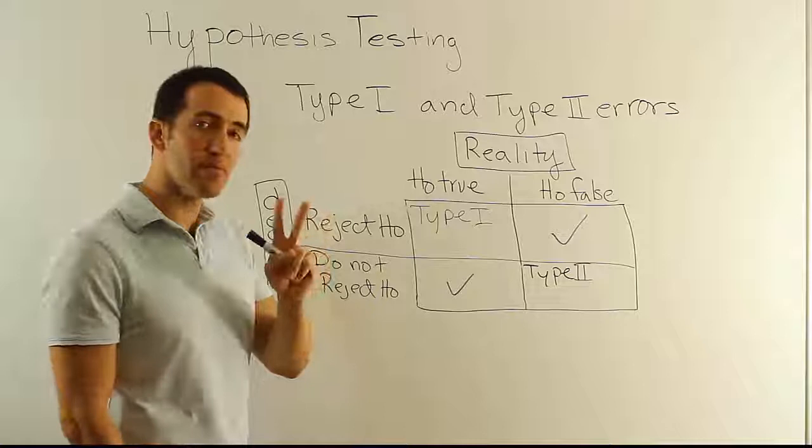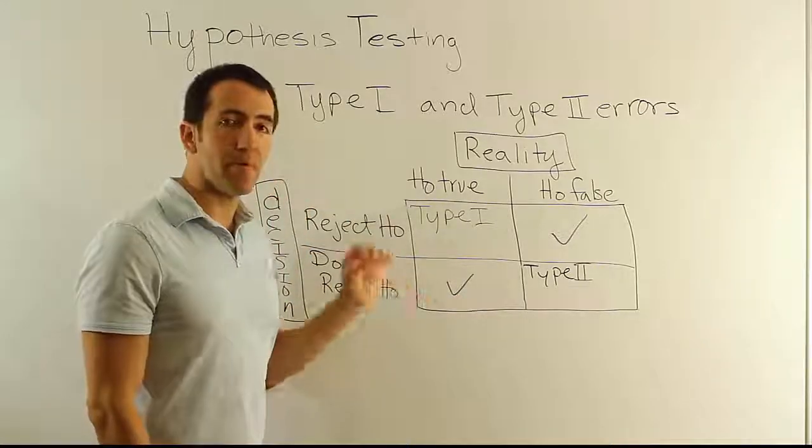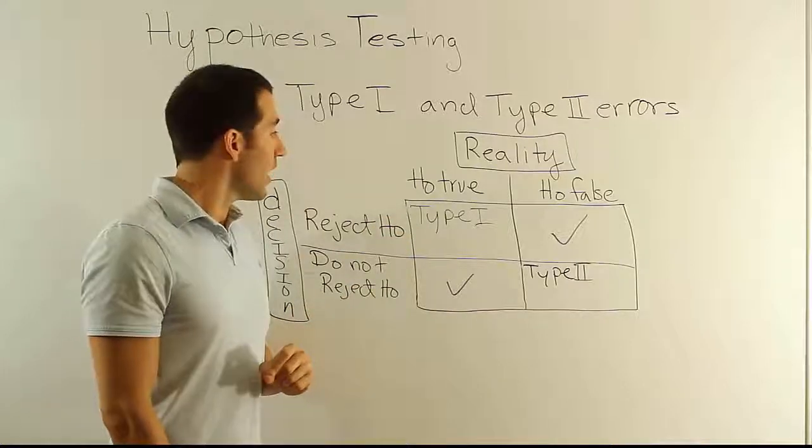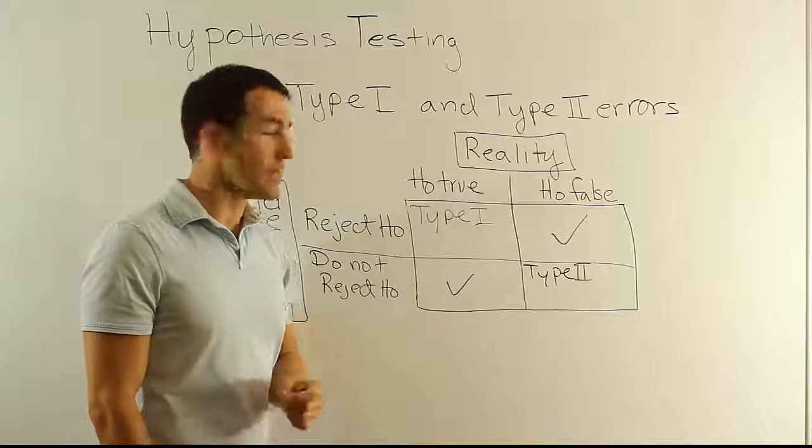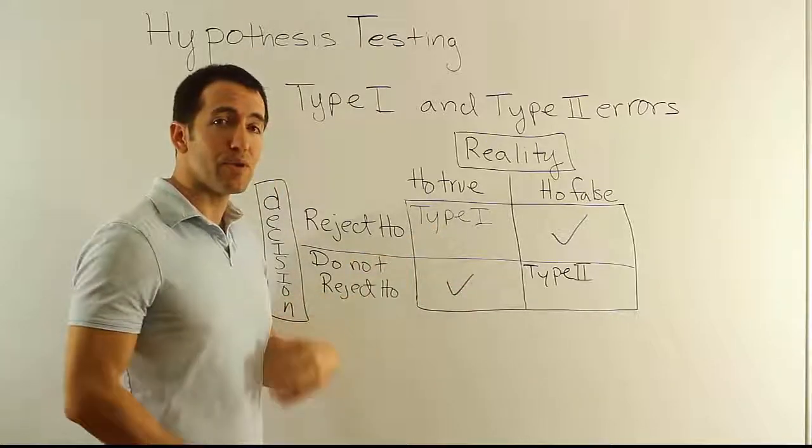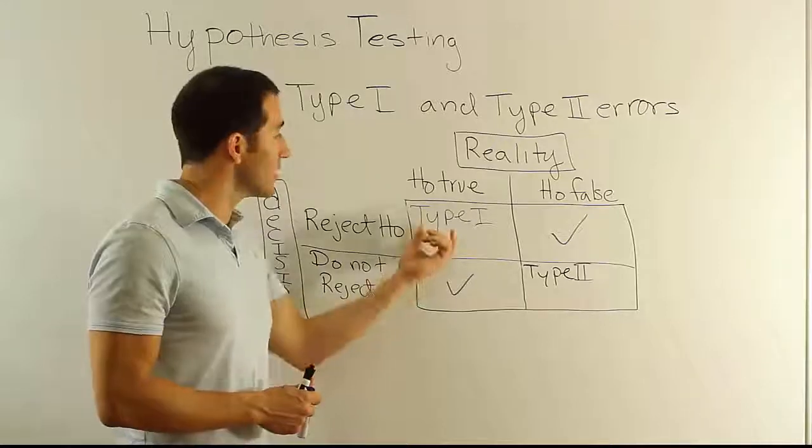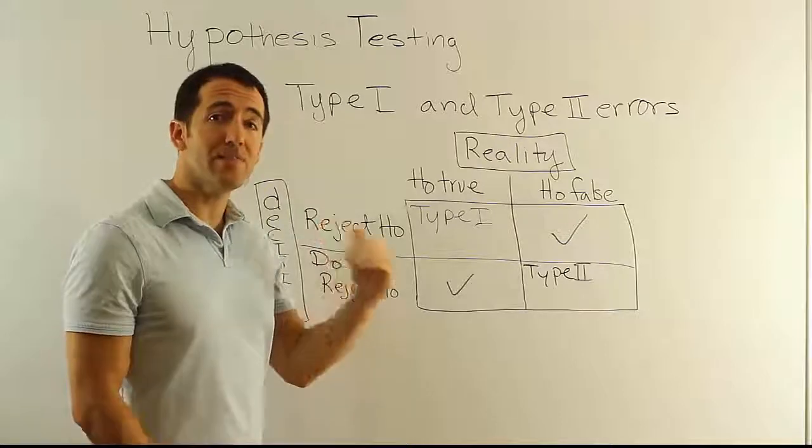So we're going to talk about two more things related to this concept. These are the only four outcomes. I don't want you to think they're equally probable. They're not equally probable. The correct decisions happen way more often than the incorrect decisions, typically. And for this guy, the Type I error, we're going to deem it to be the worst error, the error we're most concerned with. So we're going to actually put a limit on there.